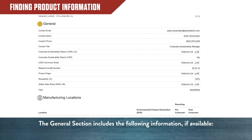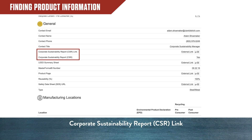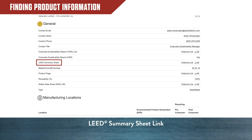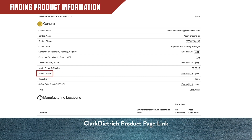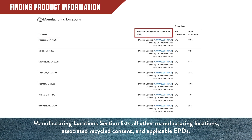The General section includes the following information when available: contact information and links to the Corporate Sustainability Report, LEED Summary Sheet, Master Format Number, Clark-Dietrich Product Page, and Safety Data Sheet. At the bottom of the page is the Manufacturing Locations section, which lists all other manufacturing locations for that specific product, associated recycled content, and applicable EPDs.